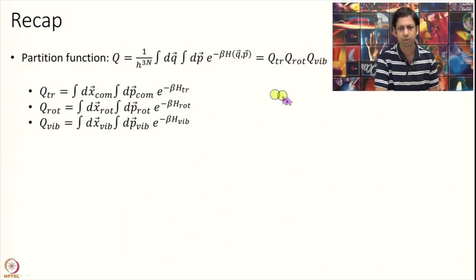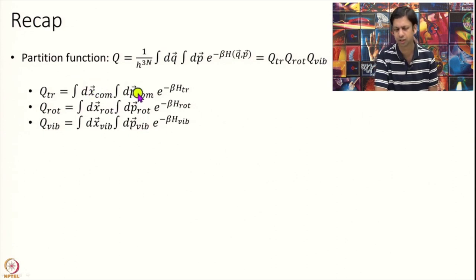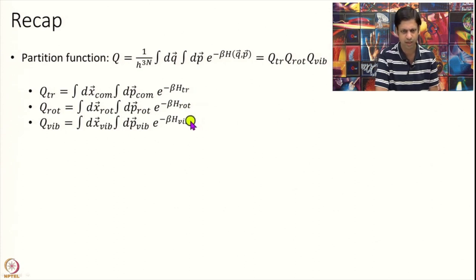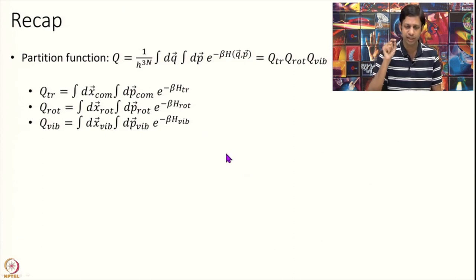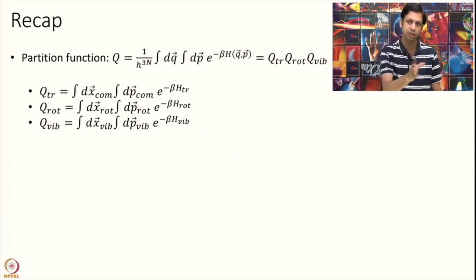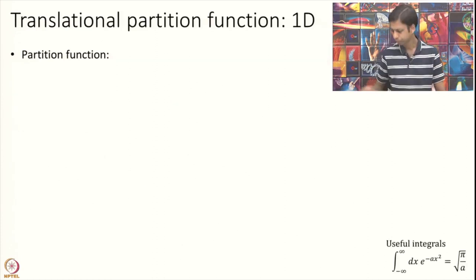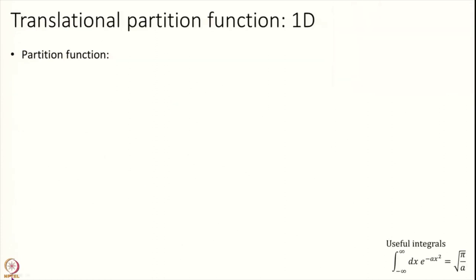So you get Q equal to Q_translation times Q_rotation times Q_vibration, where the translational one is an integral over 3 degrees of freedom — 3x and 3p, a 6-dimensional integral over the translational Hamiltonian. The rotational one is over the rotational Hamiltonian and the vibrational one is over the vibrational Hamiltonian. Today we are going to calculate these exactly. We are in a position to actually do these integrals. Let us start with translational, and first do it in one dimension. I know our world is in 3D but doing the integral in 1D is easier and then we will generalize to 3D.